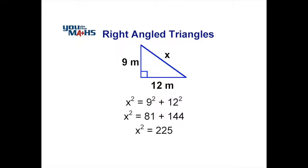Now we want to find out what x is. At this stage it's x squared, so we have to do the opposite operation to remove the squared, which is to take a square root.